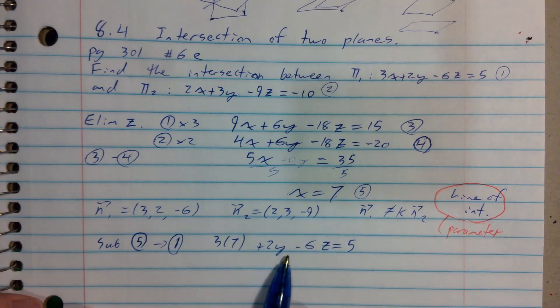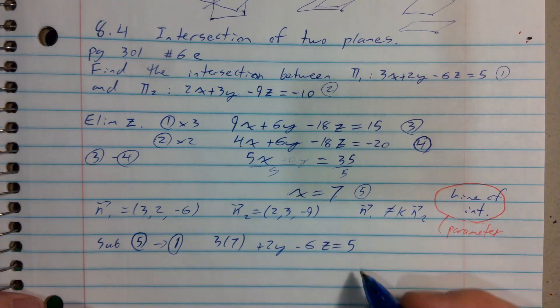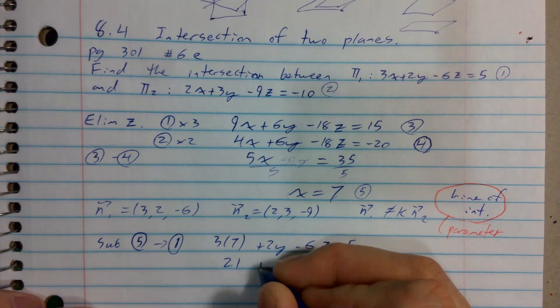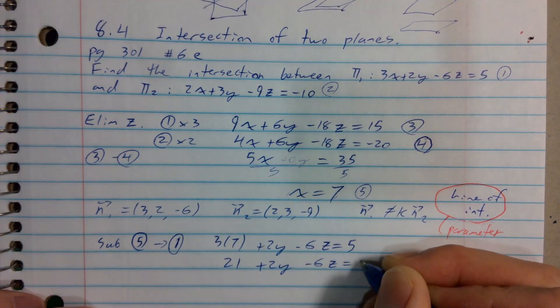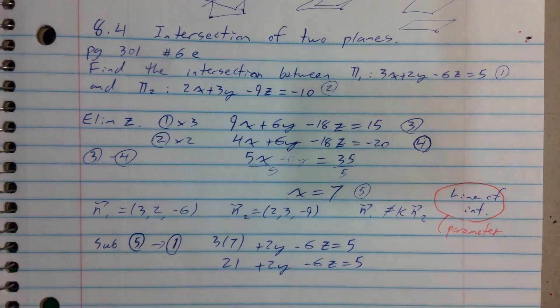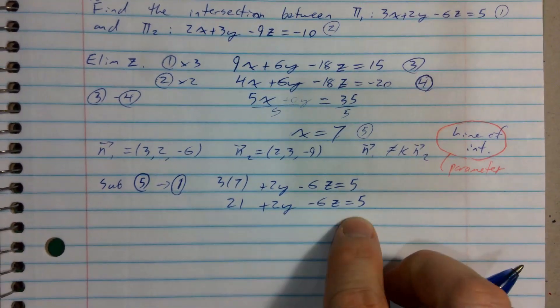That'll give me that statement right there, that 3 times 7 plus 2y minus 6z has to equal 5. If I just keep on tidying up, like simplifying, like a mathematician should do,